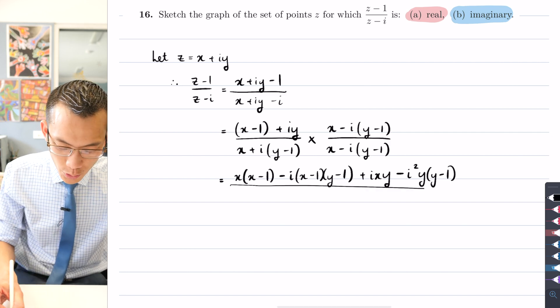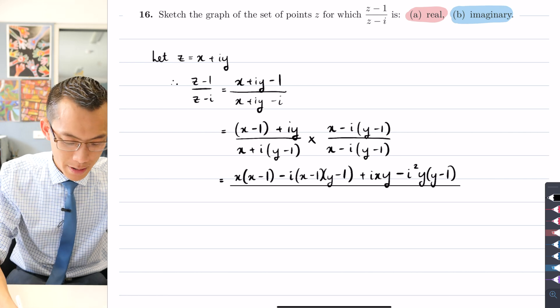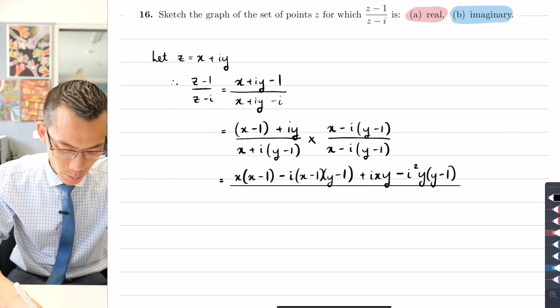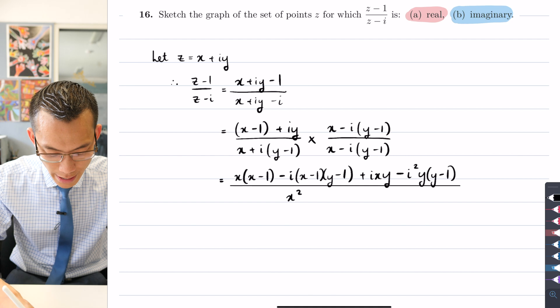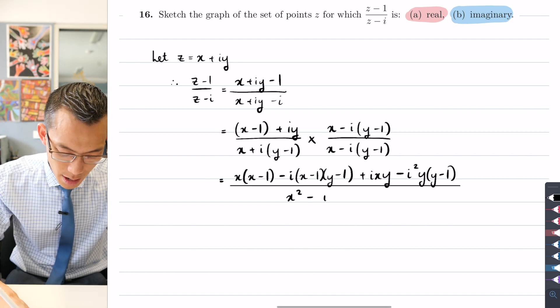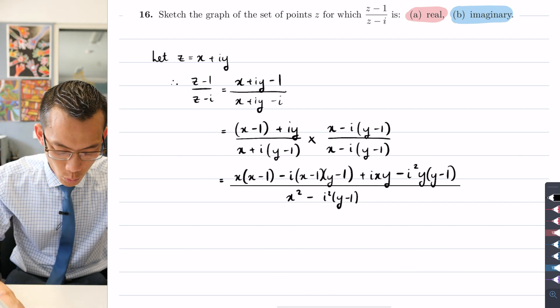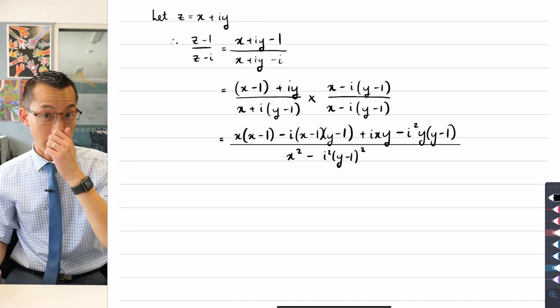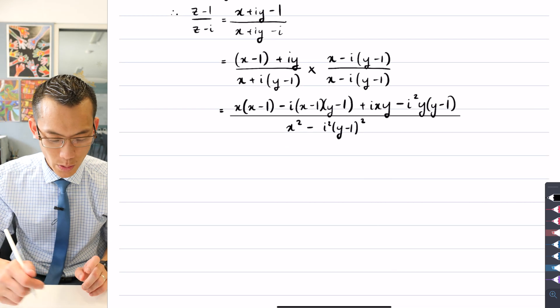Okay, let's draw a nice big fraction line. And then what's happening on the denominator? Well, it's this difference of squares thing we were talking about. So I've got x squared and then I subtract i squared (y - 1) squared, and that's it, that's already been factorized according to difference of squares.